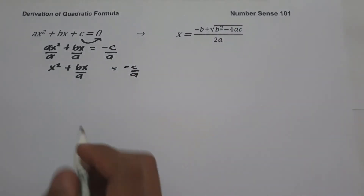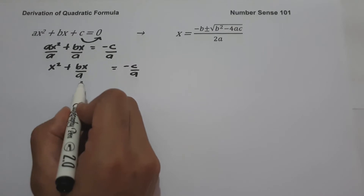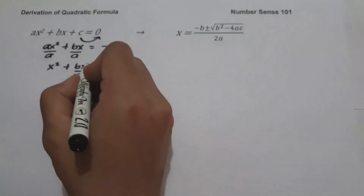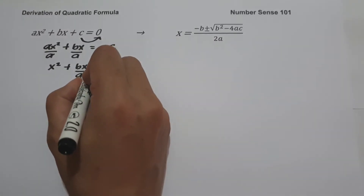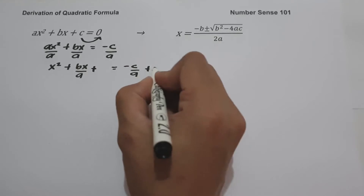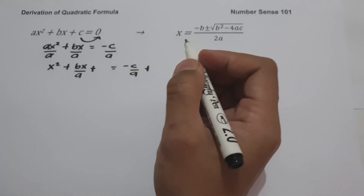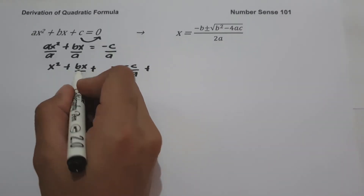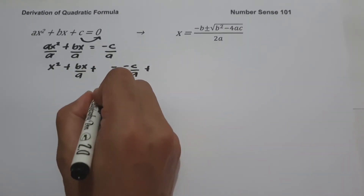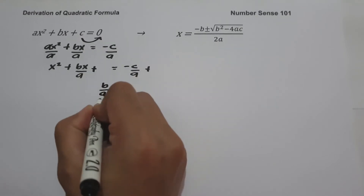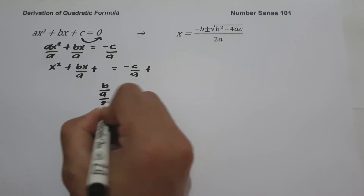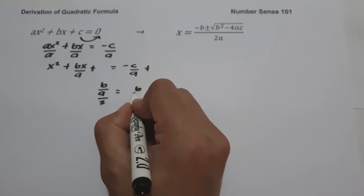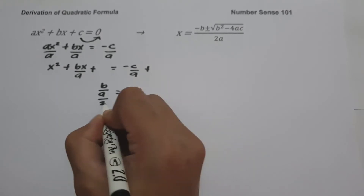We are going to make the left side of the equation a perfect square trinomial by adding an expression to both sides. Since the coefficient of x is b/a, we divide it by 2 to get b over 2a.